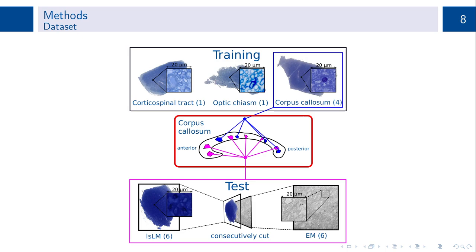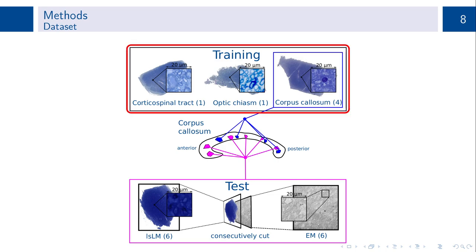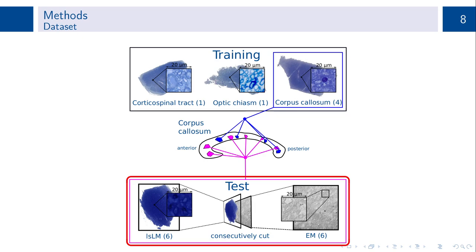For the corpus callosum sample, we acquired a total of 10 LSLM sections, of which four were assigned to the training dataset. In total, 17 subsections across all sections in the training dataset were annotated to train the CNN. The remaining six sections of the corpus callosum sample were assigned to the test dataset.